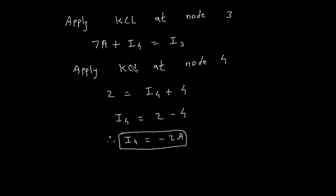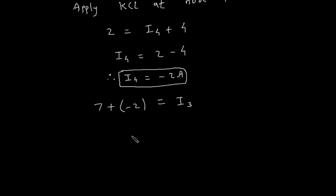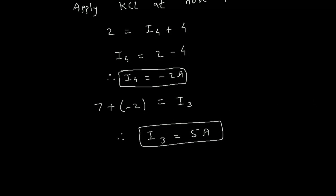Putting this value into the equation: 7 plus I4 — which is minus 2 — is equal to I3. Therefore I3 is equal to 5 ampere. For electrical and electronics engineering related questions and answers, visit the link in the description below.